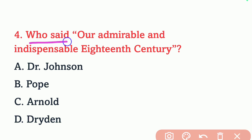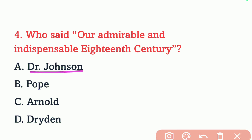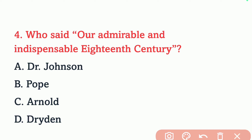Question number 4. Who said 'our admirable and indispensable 18th century'? Options: Dr. Johnson, Pope, Arnold, or Dryden. The correct answer will be Arnold. Option C is the right answer.